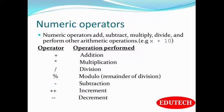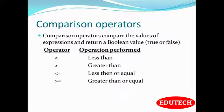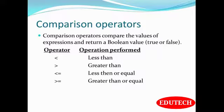Numeric operators include addition, multiplication, division, modulo, subtraction, increment, and decrement — all having operands of type number. Comparison operators compare the values of expressions and return a boolean value (true or false). Comparison operators include less than, greater than, less than or equal to, and greater than or equal to.